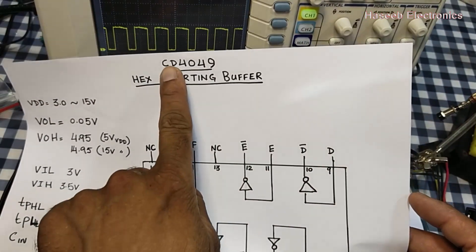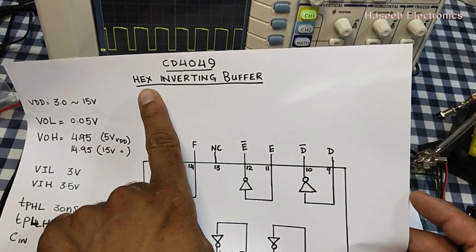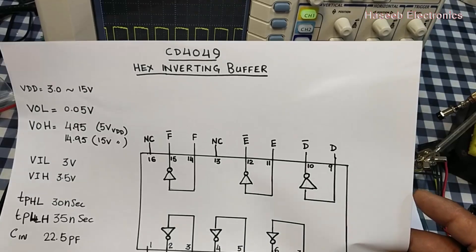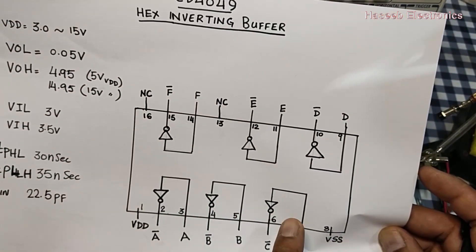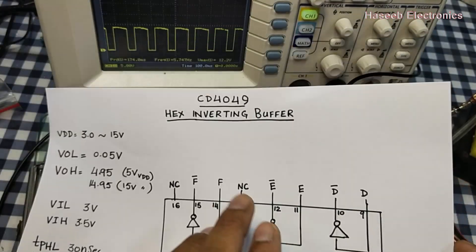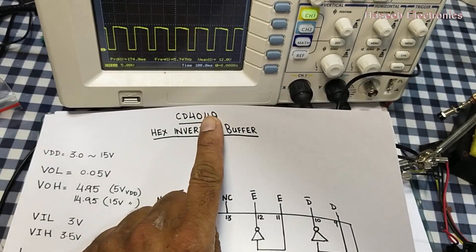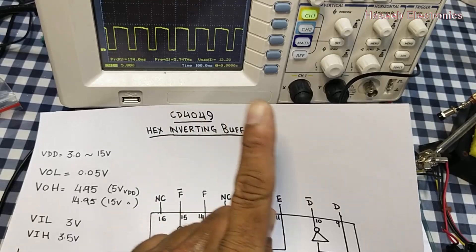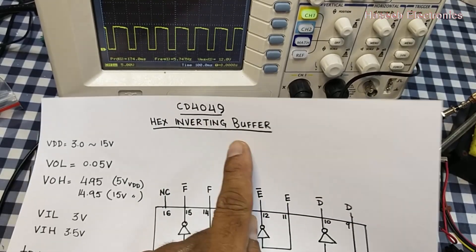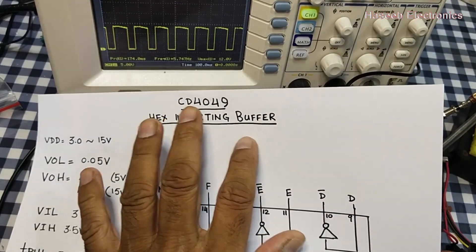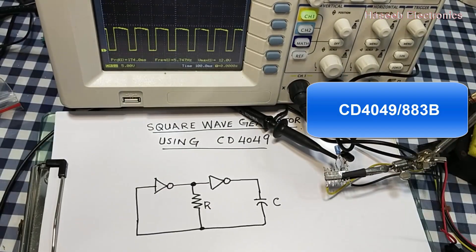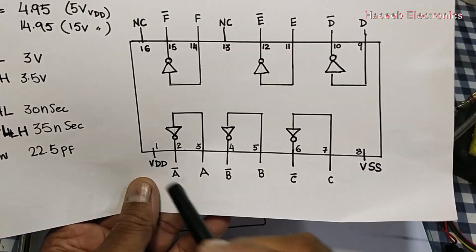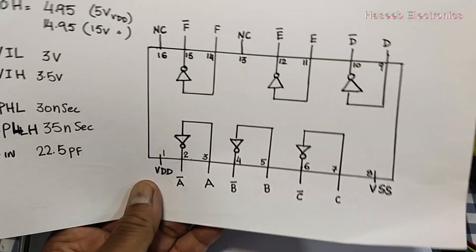In my last video I discussed the CD4049 hex inverting buffer. This IC has six independent inverting buffers inside. We can also use the CD4069 IC, which is just an inverter, but this IC is an inverting buffer. We can use either one — there is no difference — but the CD4049 is more useful.